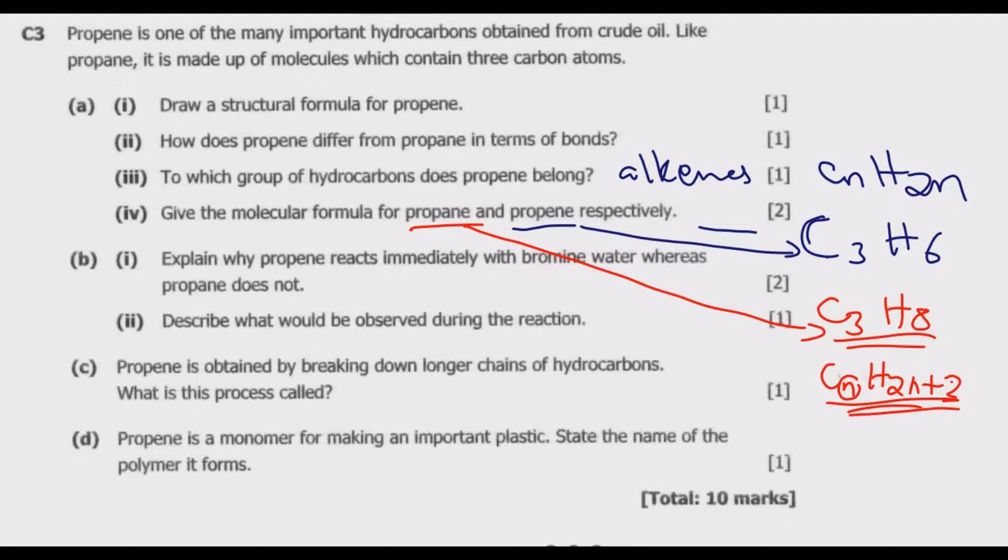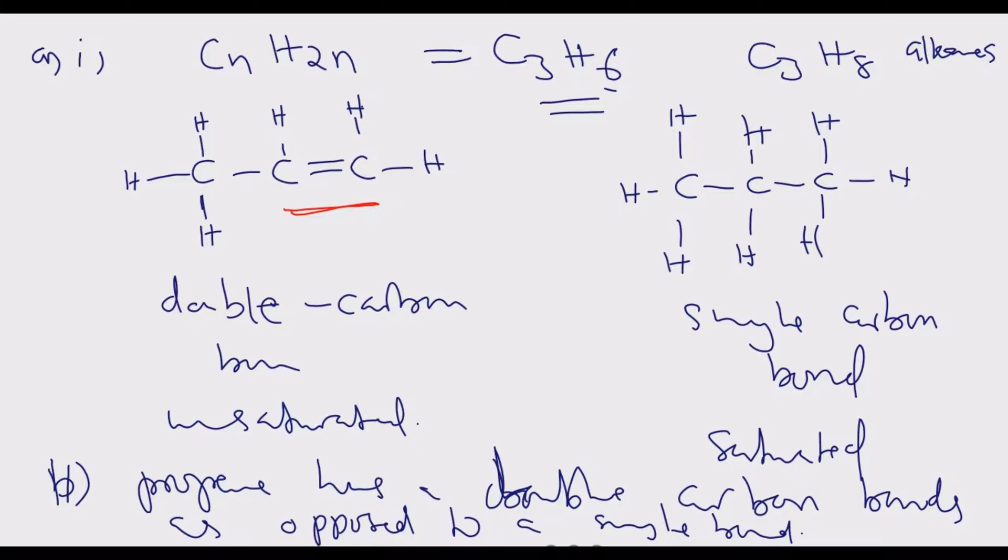Question (b)(i): Explain why propene reacts immediately with bromine water whereas propane does not. This one has a double bond because it has a double carbon bond, it can undergo additional reaction. The double bond can be broken in such a way that an additional element blocks this, then you have this bond. Bromine would come here and here, then you have this additional reaction. This can't happen with propane because it's saturated; all the bonds are done.